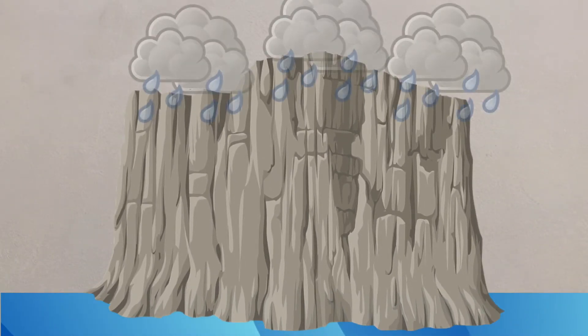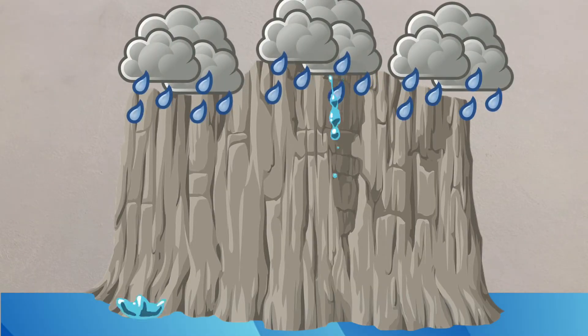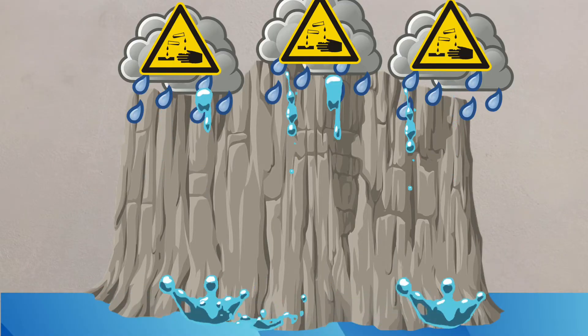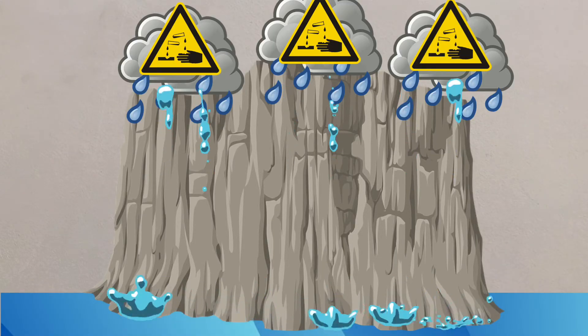Chemical weathering is where the rocks are affected by chemical changes from rain or seawater. Slightly acidic rainwater will attack more alkaline chalk or limestone cliffs and will slowly dissolve the rocks.